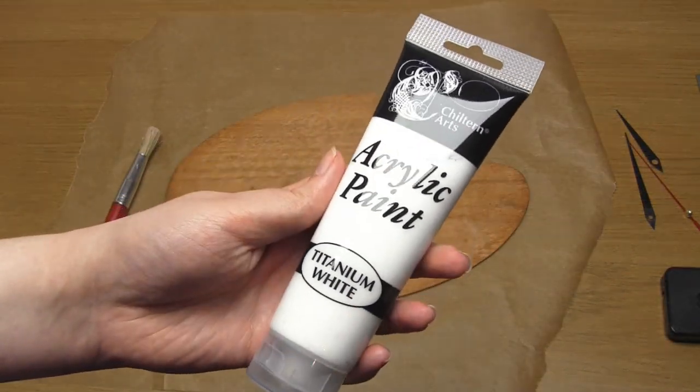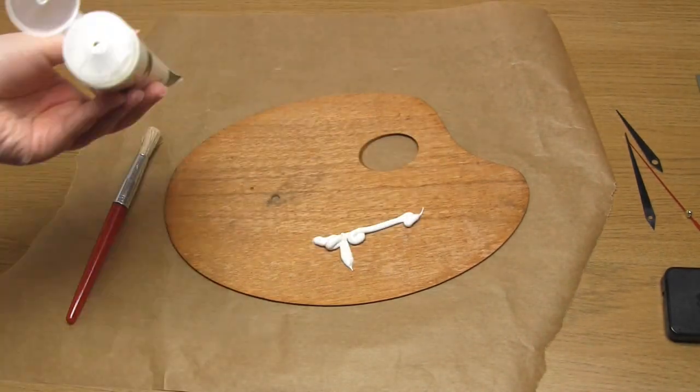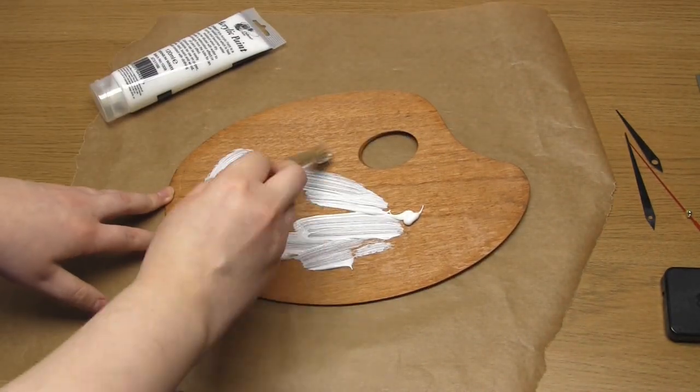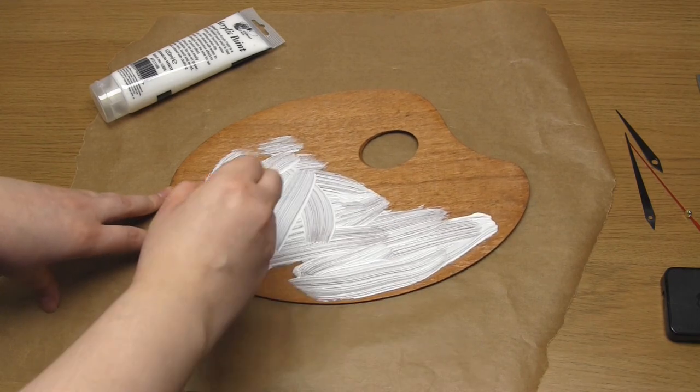Then to paint the palette, I used two coats of white acrylic paint. However, this is quite a cheap acrylic paint and two coats didn't cover the wood very well.